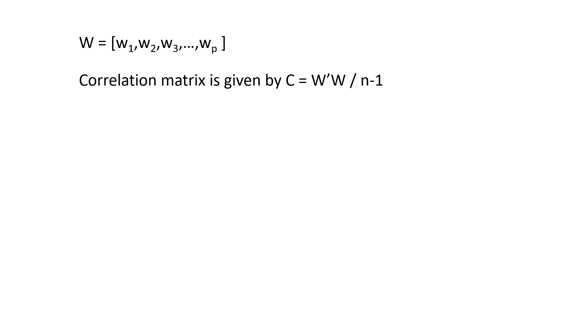Now that we have the normalized matrix W, we can find the correlation matrix as W transpose W divided by n minus 1.